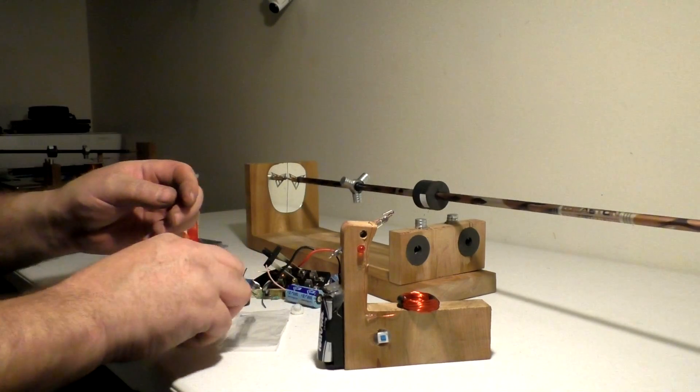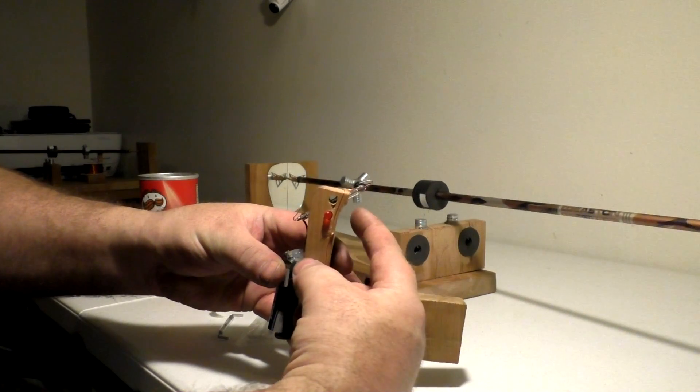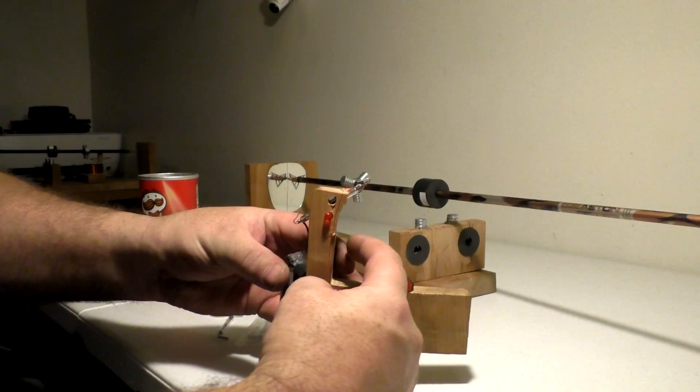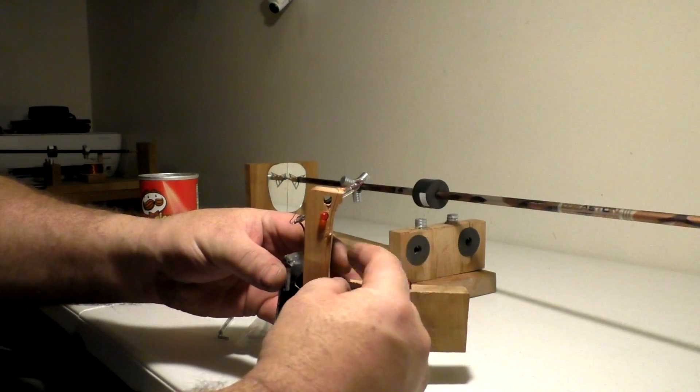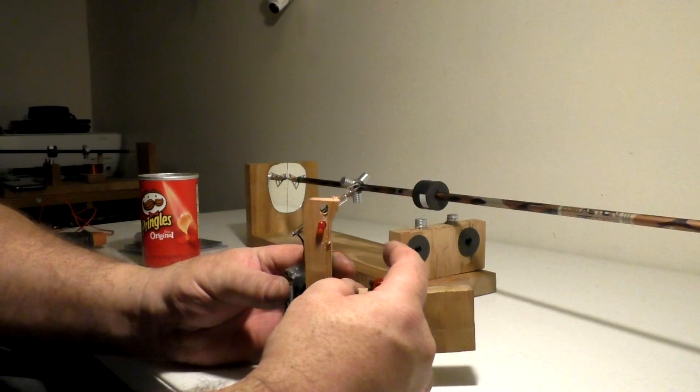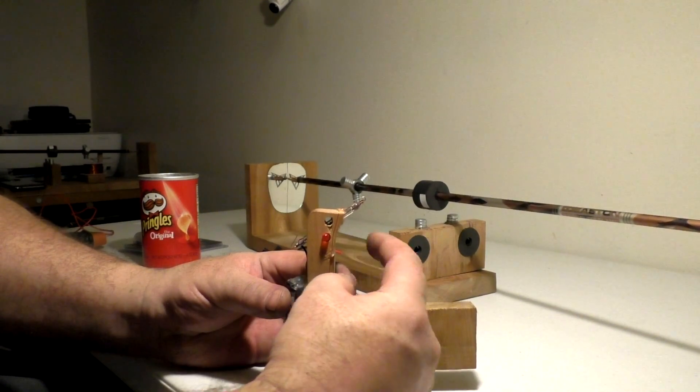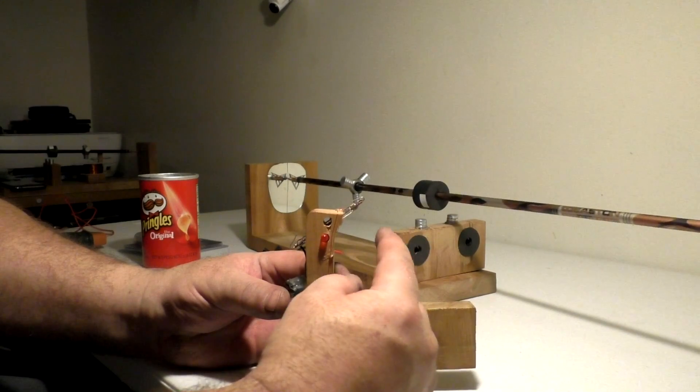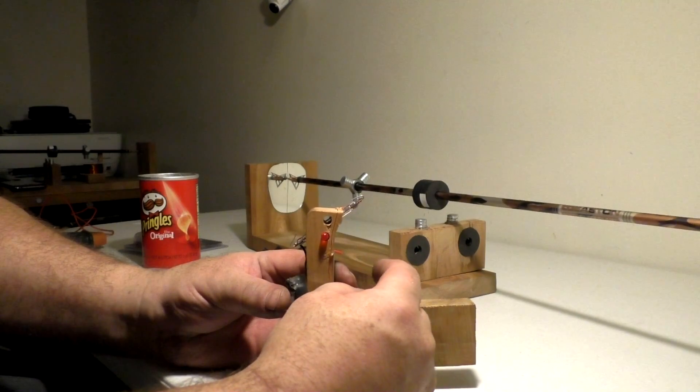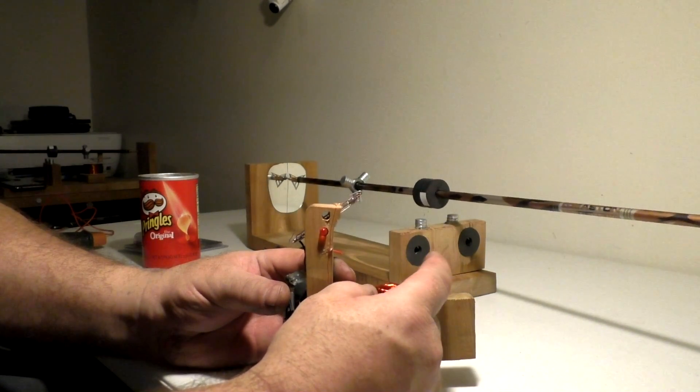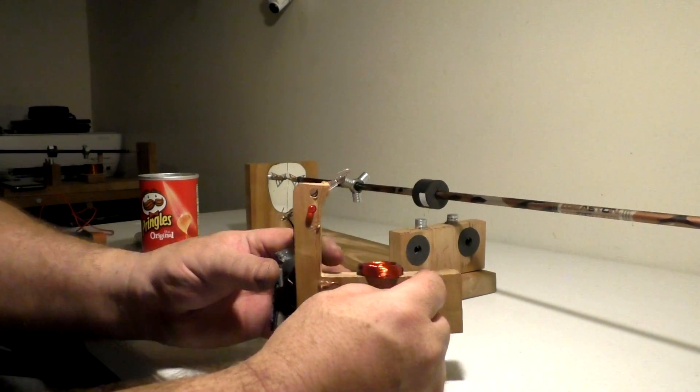And what that does is, when a magnet comes by it, the reed switch energizes the coil and pulls the magnet down and around. And I got three magnets set up, all the same polarity. Once the magnet goes by, it energizes it, pulls the other one down, and then the magnet's past the reed switch, it de-energizes, so it starts traveling around the coil. And the other one comes up, turns it on, and it is basically a cycle.